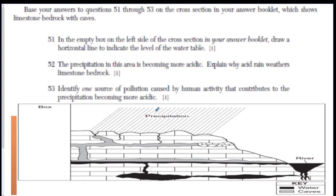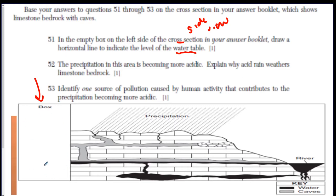Here are three little questions to see if you can get them. Use educated guesses because the first one talks about the water table, so you have to use the picture below. In the empty box on the left side of the cross section — cross section means side view — draw a horizontal line to indicate the level of the water table. Take your fingertip and outline where you think the water table would go somewhere in this box.